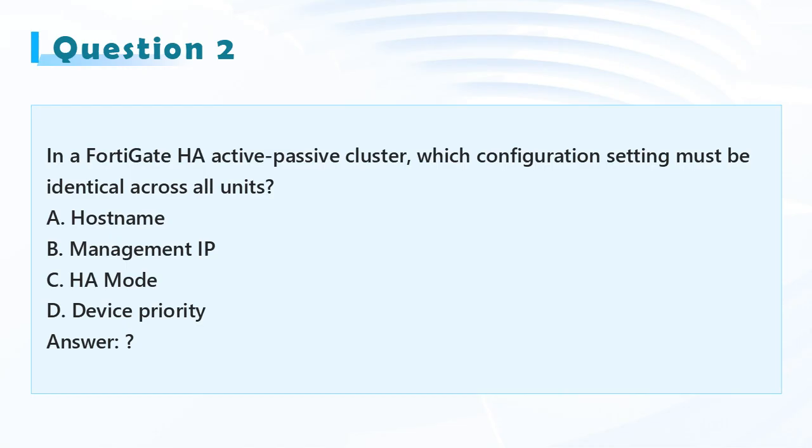Question 2: In a FortiGate HA active-passive cluster, which configuration setting must be identical across all units? A. Hostname, B. Management IP, C. HA mode, D. Device Priority.